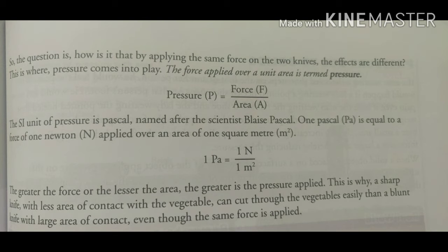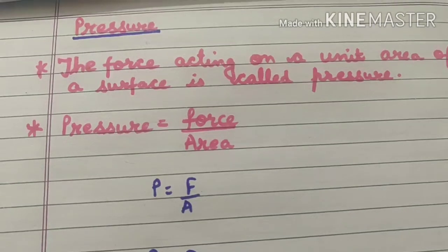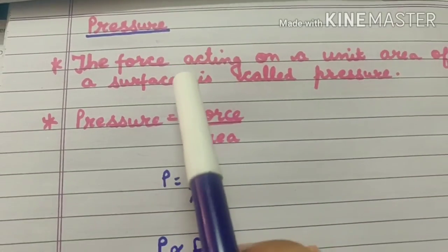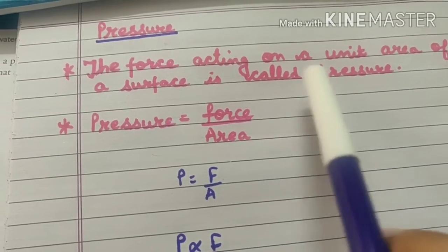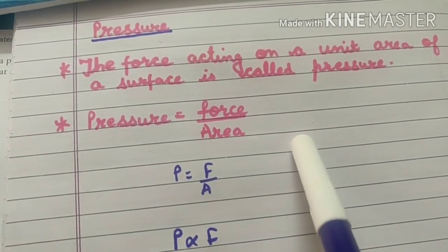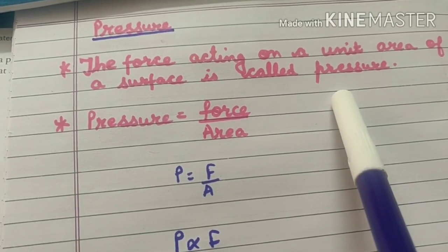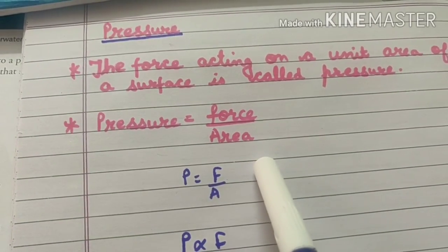It means pressure is inversely proportional to area. It means if the greater the force or lesser the area, the greater is the pressure applied. This is why a sharp knife with less area of contact with the vegetable can cut through vegetables easily than the blunt knife. So what is pressure? The force acting on a unit area of a surface is called pressure. So pressure is equals to force upon area.